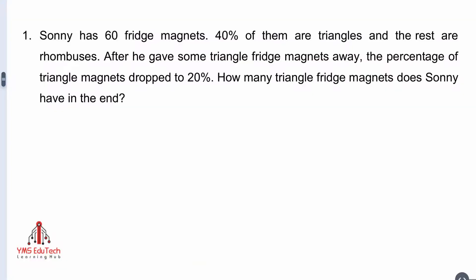If you are ready, let's read the question together. Sony has 60 fridge magnets. 40% of them are triangles, and the rest are rhombuses. After he gave some triangle fridge magnets away, the percentage of triangle magnets dropped to 20%. How many triangle fridge magnets does Sony have in the end?